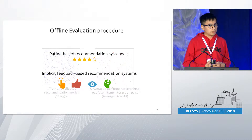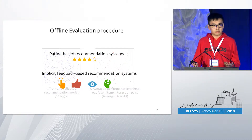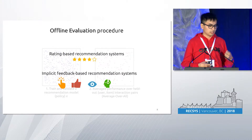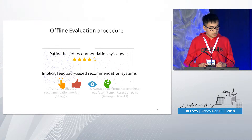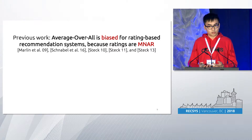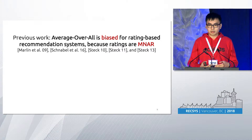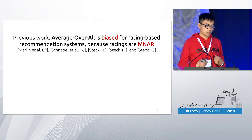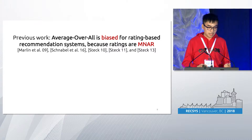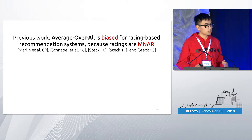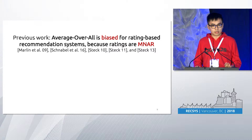This approach has been widely applied to evaluate both rating-based and implicit feedback-based recommendation systems. The implicit feedback is broadly defined here — it's the positive-only signal, such as clicks, upvotes, or views or listens. Previous work has shown that the average overall approach is biased for rating-based systems because ratings are missing not at random. However, when it comes to implicit feedback, previous work actually assumes this approach is unbiased because implicit feedback is missing uniformly at random. In fact, many papers take this for granted when evaluating recommendation algorithms.